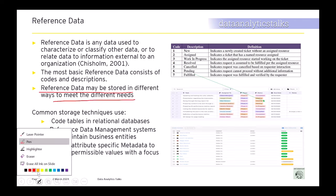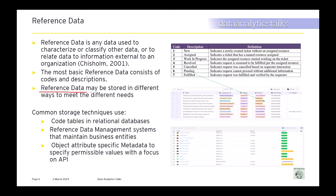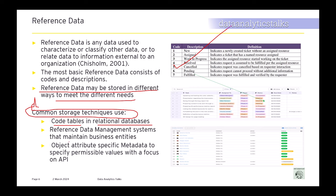Reference data may be stored in different ways to meet different needs. Common storage techniques include: code tables in relational databases — with a code, description, and definition; reference data management systems (RDM) that maintain business entities, similar to how MDM works for master data; and object-attribute-specific metadata to specify permissible values with a focus on APIs. Those are the three main ways of storing reference data.